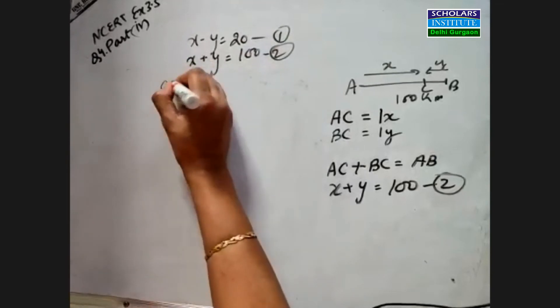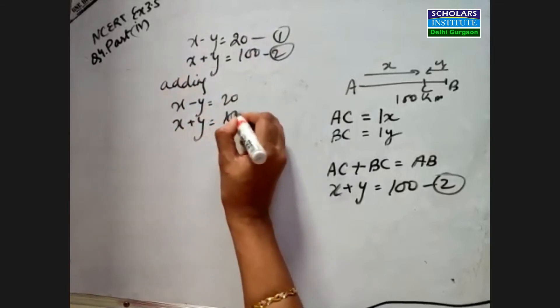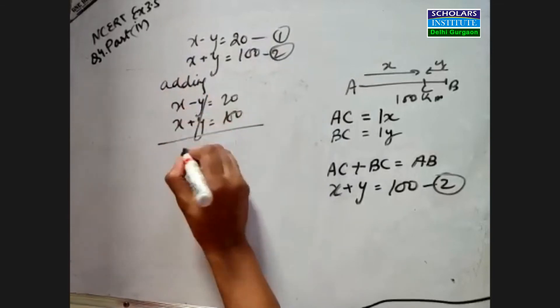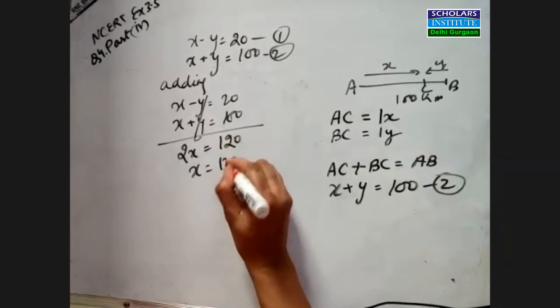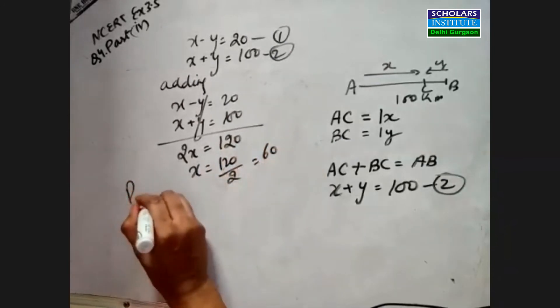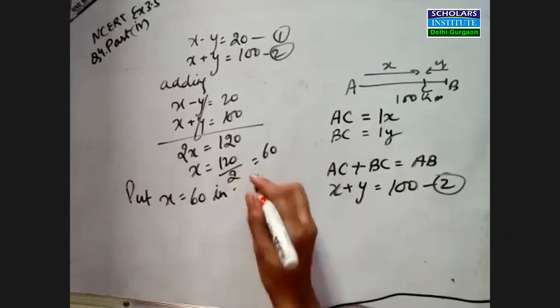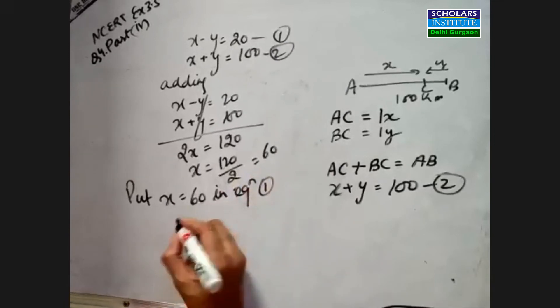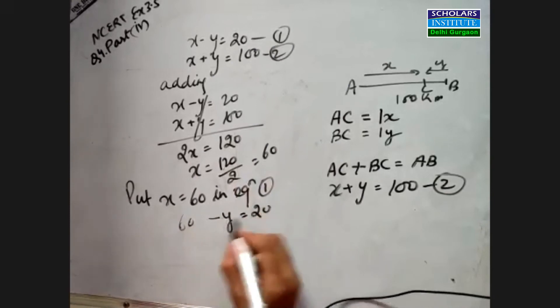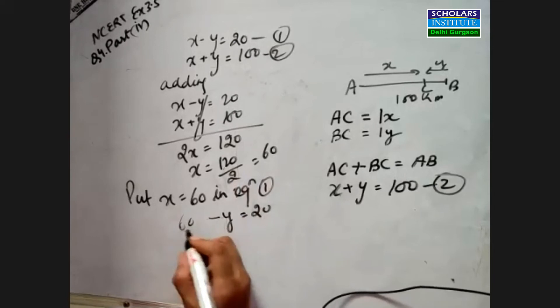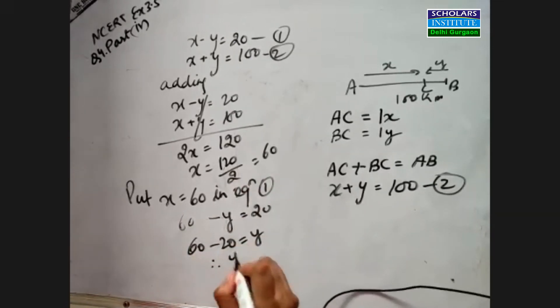Now, adding the two equations: x minus y equals 20 and x plus y equals 100. The y terms cancel, giving 2x equals 120. So x equals 60. Now put x equals 60 in equation 1: 60 minus y equals 20. Rearranging, y equals 60 minus 20, which equals 40.